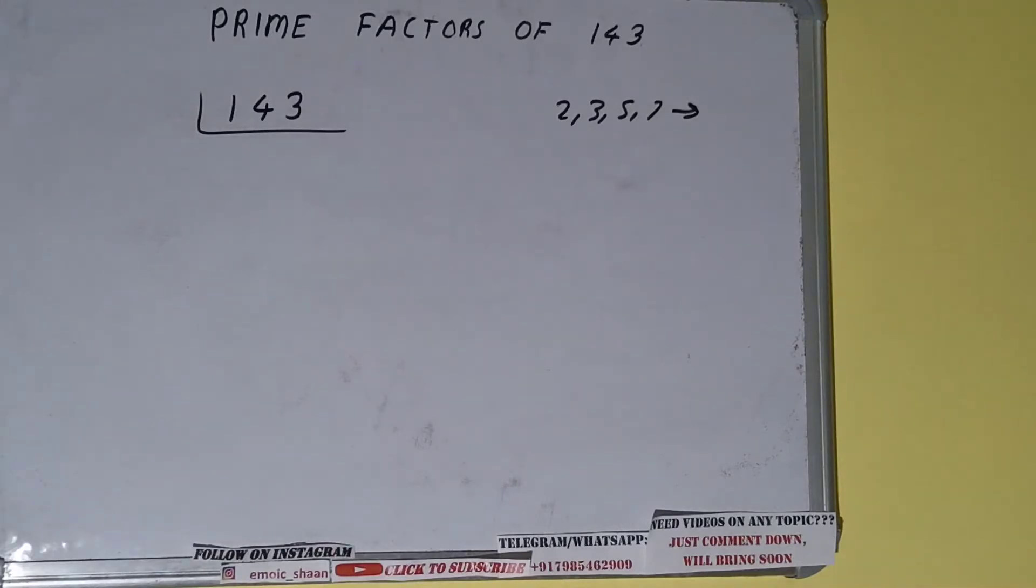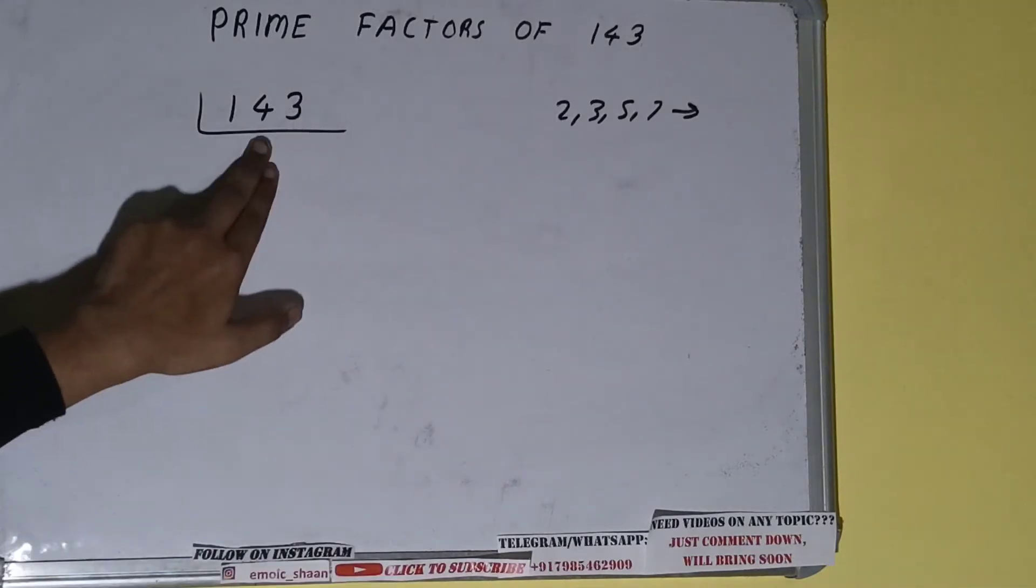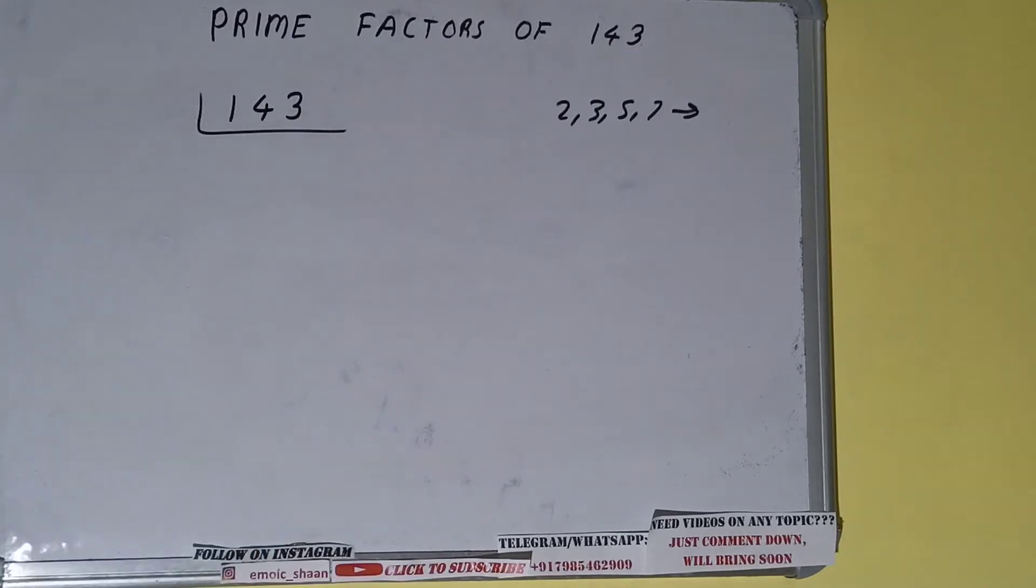We'll be checking with the lowest prime number we have, that is 2. Is the number 143 divisible by 2? Clearly not, because the number is odd.